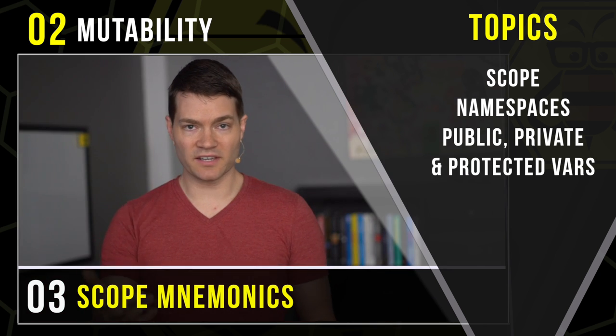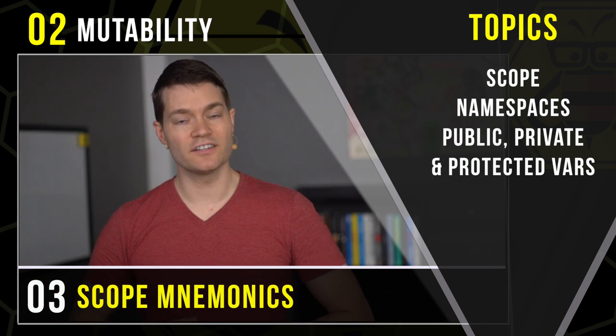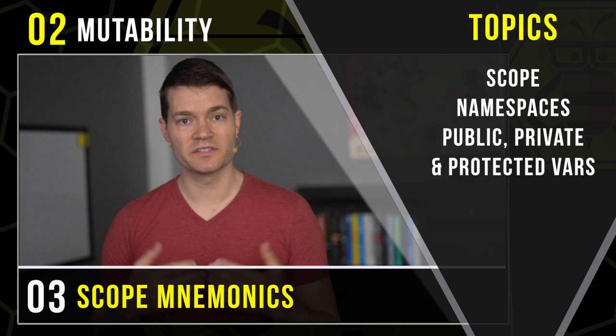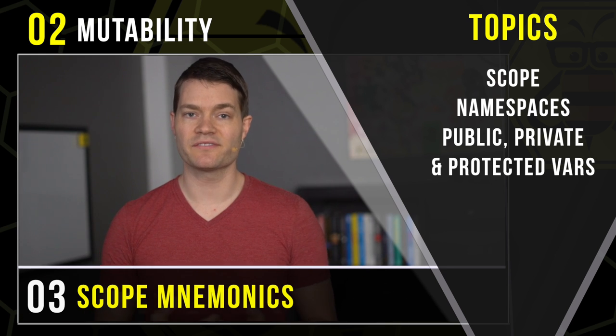Then we'll finish by talking about why some variables have a single underscore, some have a double, and most have none.